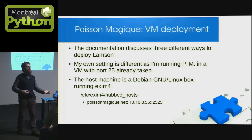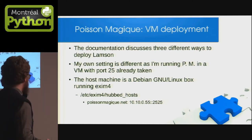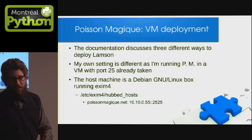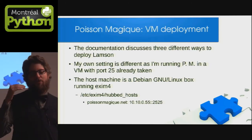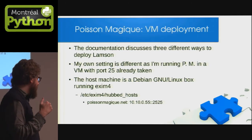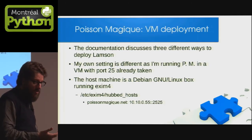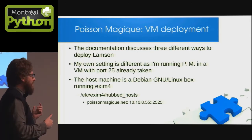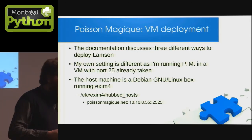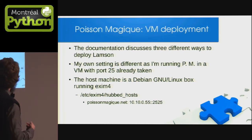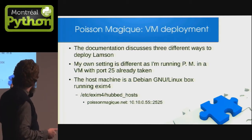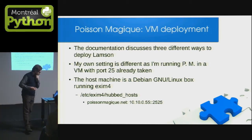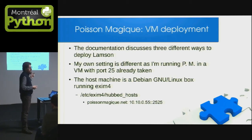Pour une chose qui utilise le courriel et le port 25, l'installation est vraiment compliquée. Pendant la documentation de Lamson, il y a trois pages différentes de comment faire l'installation. Et la chose la plus intéressante, c'est que pour l'installation que j'ai faite pour Poisson Magique, ce n'est pas dans les trois pages. Les choses que j'utilise, c'est une machine virtuelle qui roule sur une machine avec Debian Linux et utilisant Exim 4.